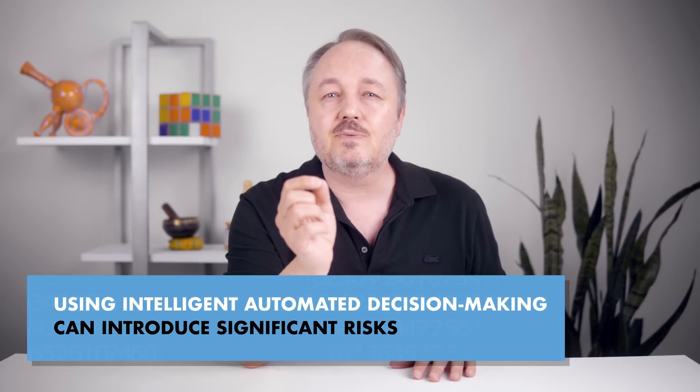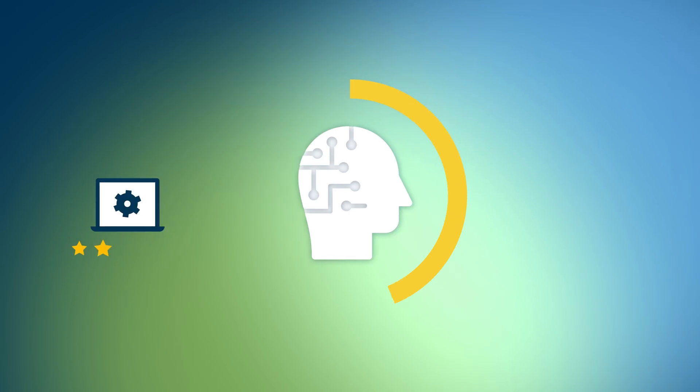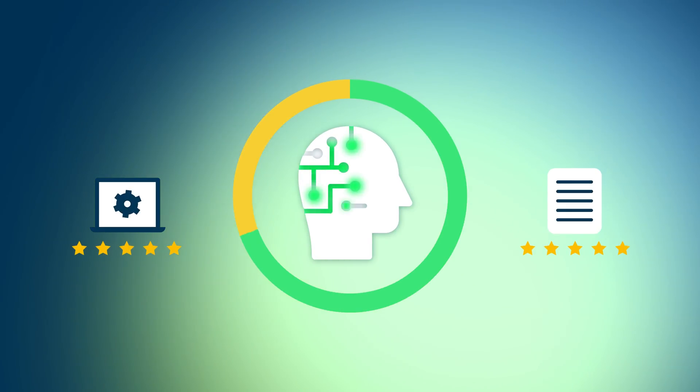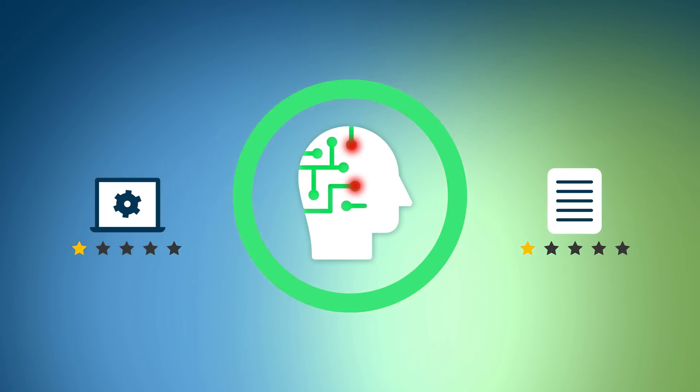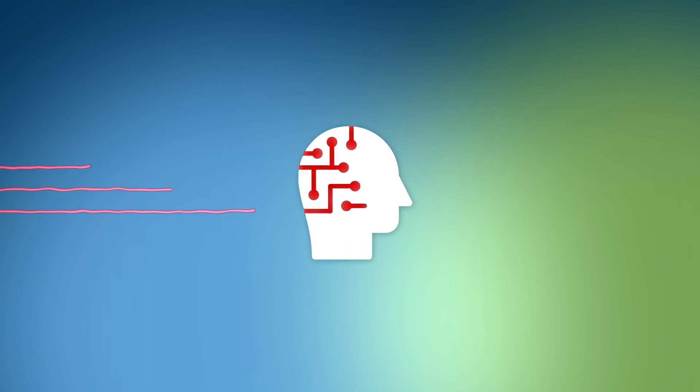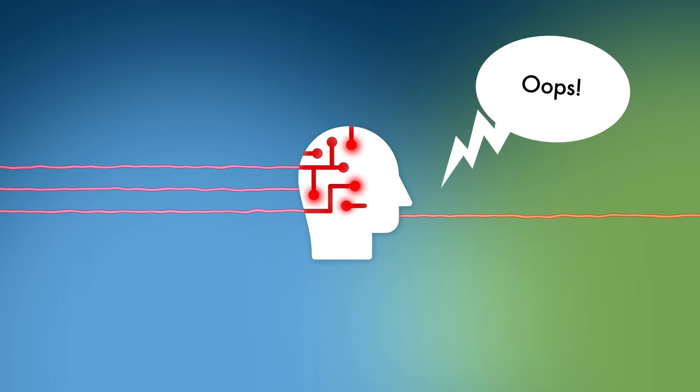But wait, things don't always turn out so well. The performance of an AI system is reliant on the quality of its design and the quality of the input data we give it. A bad design or bad input will, predictably, lead to bad data intelligence and bad decisions. A big problem with this is that it can sometimes take a company a long time to figure out that its AI is actually flawed.